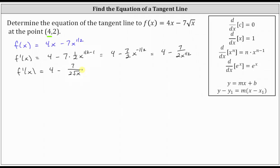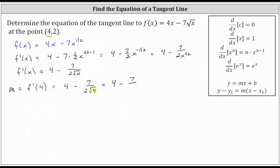Now that we have the derivative function, we can determine the slope of the tangent line at the point (4, 2) by evaluating the derivative at x equals 4. So the slope of the tangent line m is equal to f'(4), which is equal to 4 minus 7 divided by the product of 2 and the square root of 4. Simplifying, we have 4 minus 7 divided by — well, the square root of 4 is 2, and 2 times 2 is 4 — giving us 4 minus 7/4.